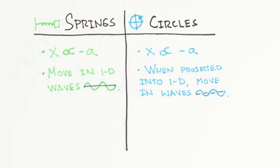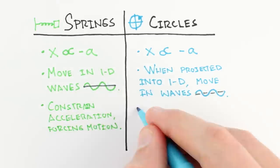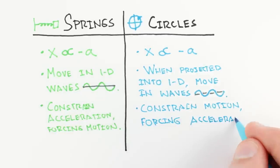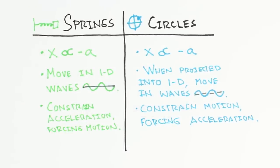In the circle case, we started by assuming a motion, and figured out the acceleration created by the motion. In the spring case, we assumed an acceleration, and then figured out the motion. In both cases, we found the same exact relationship. Position is proportional to negative acceleration. This is the connection.